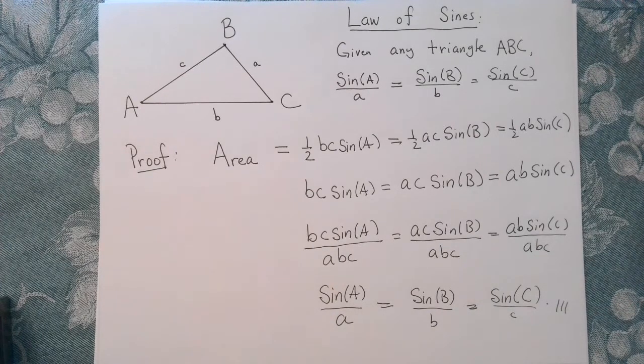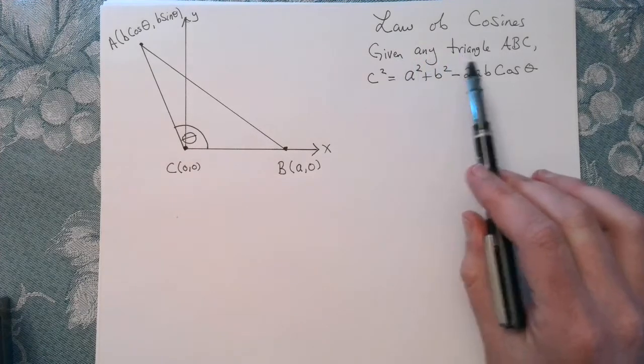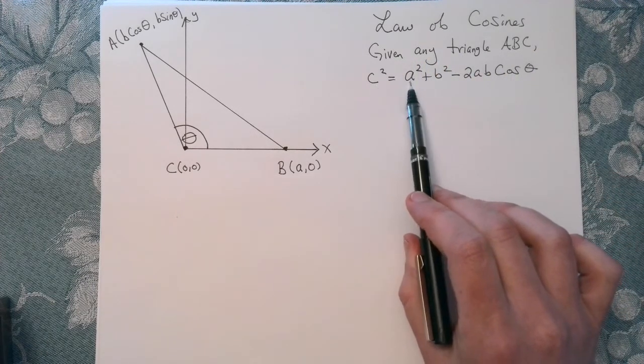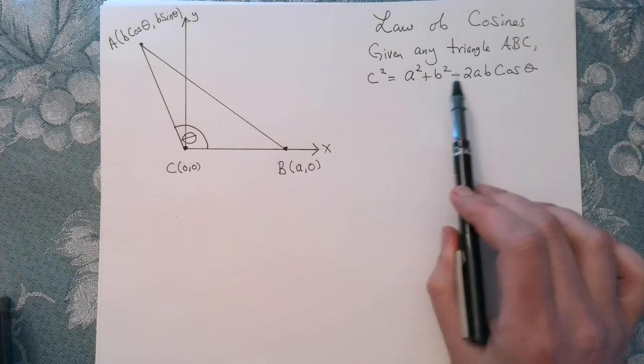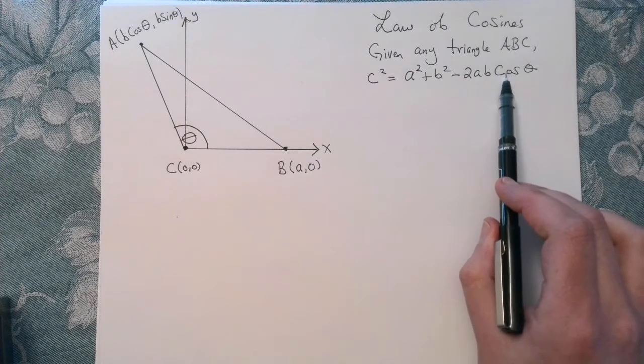And now let's talk about the law of cosines. So we want to establish the law of cosines, which says the following. Given any triangle ABC, the side C squared is equal to the side A squared plus the side B squared minus 2AB cosine of the angle in between.